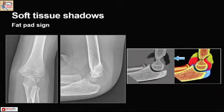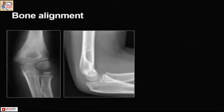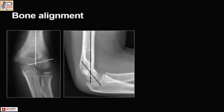Initially we look for soft tissue shadows — where is the swelling, medial, lateral, anterior, or posterior — and we look for something called the fat pad sign or sail sign. You can see the shadows on the lateral view, both anterior and posterior. Then we look for bony alignment: is there good cortical continuity, is the Baumann angle normal (around 72 plus or minus 5 degrees), and how is the shaft-condylar angle (around 40 degrees). The anterior humeral line should cut directly through the central third of the capitulum.